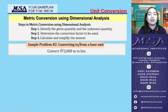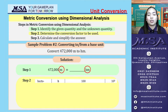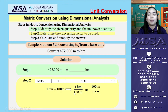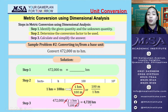Let's have an example of converting to or from a base unit: convert 472,000 meters to hectometers. Step 1, we are asked to convert meters (given) into hectometers (unknown). Step 2, from our table, 1 hectometer is equivalent to 100 meters. We choose the conversion factor that places meters opposite our given unit. Canceling the meters, the final answer is 4,720 hectometers.